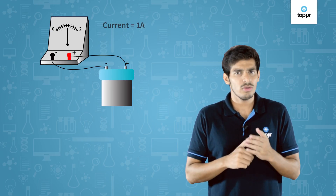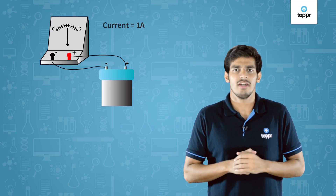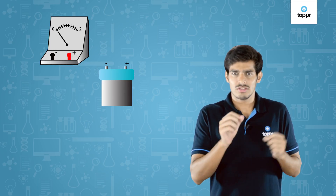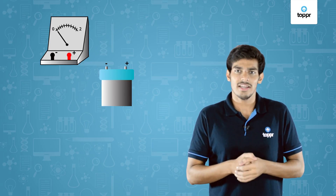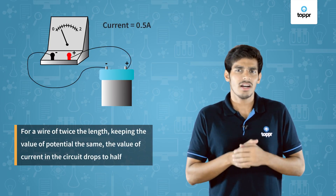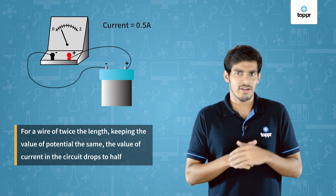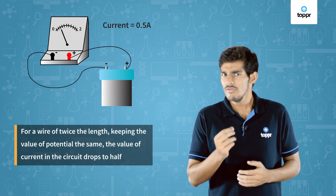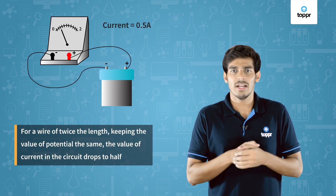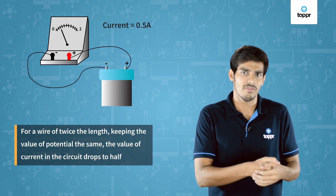Consider I have an open circuit. If I connect a wire across the two terminals, for an applied potential V, I will note down the value of current. Now across the same two terminals, for the same given battery, if I connect a wire of twice the length, again I will note down the value of current. I find the value of current has gone down to half.